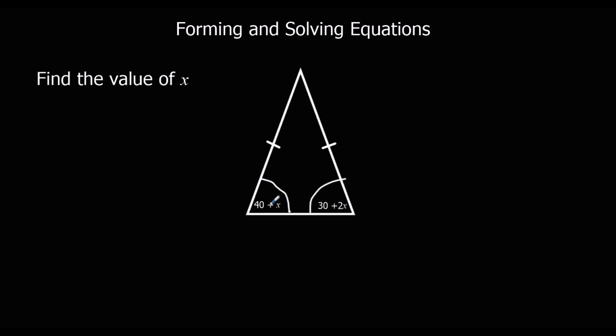40 plus x is the same as 30 plus 2x. Because they're the same, we can write that as an equation: 40 plus x equals 30 plus 2x.